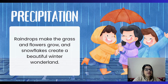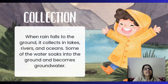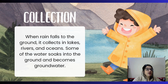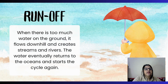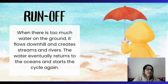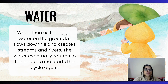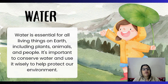Snowflakes make a beautiful winter wonderland. The next stage is collection. When rain falls, water collects on the land and becomes groundwater, or it flows to rivers and eventually reaches the sea and the ocean. Then this cycle begins again.